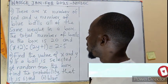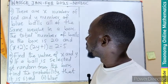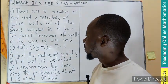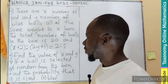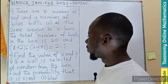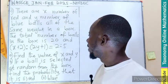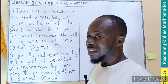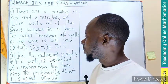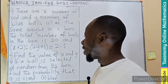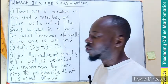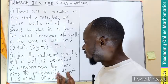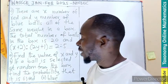So there are X number of red and Y number of blue balls, all of the same width, in a box. The total number of balls in the box is 20, and the ratio of X plus 2 to that of 2Y plus 1 is equal to 2 is to 5. We have to find the value of X and Y, and then find the probability of both red and blue.